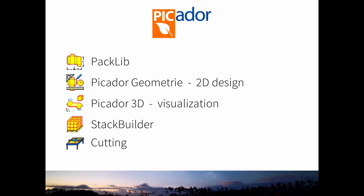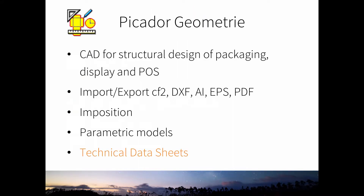Picador is actually a suite of applications — there are five modules that all work fluently together. For today's episode we will focus on the 2D design module, the CAD drawing module. If you are interested in the other modules you can find a video on our YouTube channel. The 2D CAD module is meant for the structural design of packaging. It allows for importing and exporting of many file formats, imposition of drawings, and the creation of parametric models, which can then be used within the Packlib application to easily change the size values of your packaging.